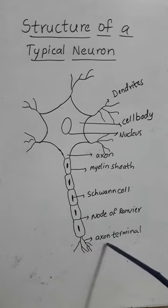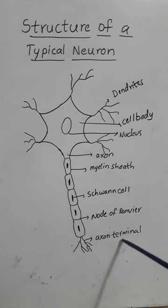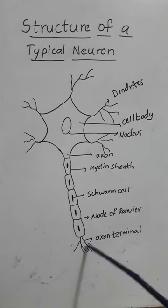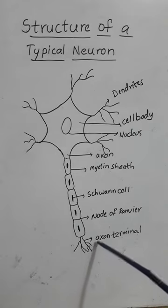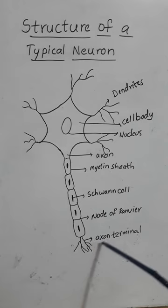The terminal part of this axon is axon terminal which helps in the transmission of the neurotransmitter from one neuron to another neuron.